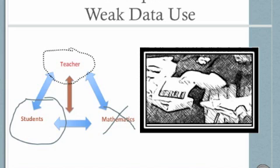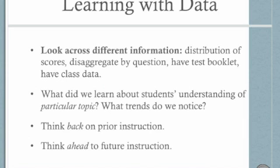So when we think about how you as an instructional leader might press teachers to learn with data, one of the things that the teachers in example three did was that they looked across a rich variety of information. The student test performance was one thing. And even then they had really multiple representations of it. They had the distribution of test scores that was disaggregated by question. They had the test booklet. They had their classes data. And they had the conversations with the kids.